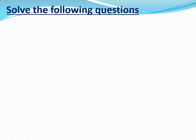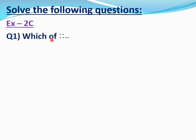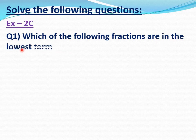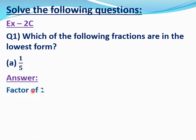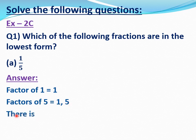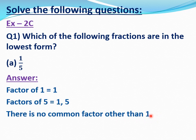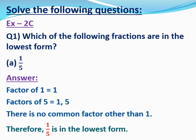Now solve the following questions, Exercise 2C from the Together with Essence book, Term 2. Question number 1: which of the following fractions are in the lowest form? A part, 1 by 5. We have to check whether 1 by 5 is in the lowest form or not. A fraction in lowest form cannot be further simplified. First we will calculate factors of numerator and denominator, that is 1 and 5. Factor of 1 equal 1 and factors of 5 equal 1 and 5. There is no common factor other than 1. Therefore 1 by 5 is in the lowest form.